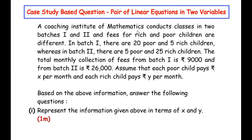A coaching institute of mathematics conducts classes in two batches — batch 1 and batch 2 — and fees for rich and poor children are different. In batch 1 there are 20 poor and 5 rich children, whereas in batch 2 there are 5 poor and 25 rich children. The total monthly collection from batch 1 is rupees 9,000 and from batch 2 is rupees 26,000. Each poor child pays rupees x per month and each rich child pays rupees y per month. The first question asks us to represent this information in terms of x and y.